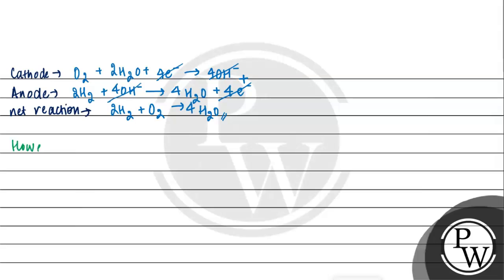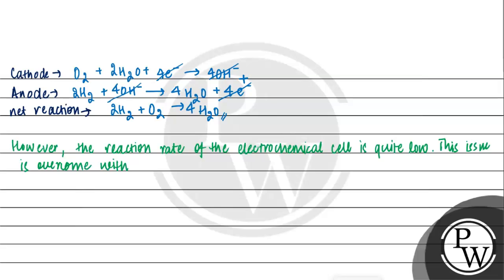However, the reaction rate of the electrochemical cell is quite low. This issue is overcome with the help of a catalyst such as platinum or palladium.